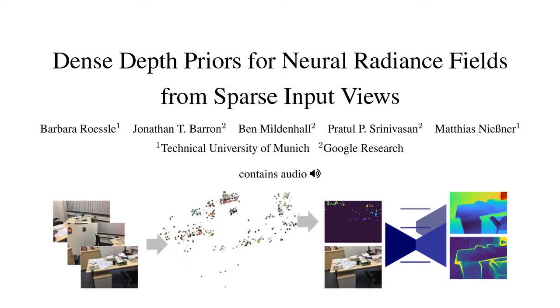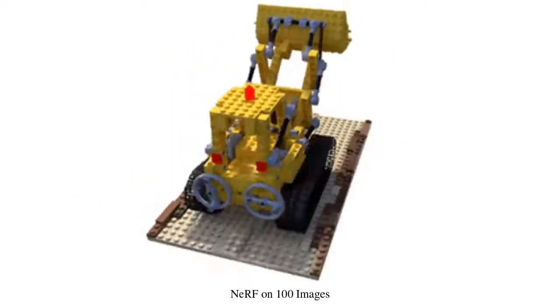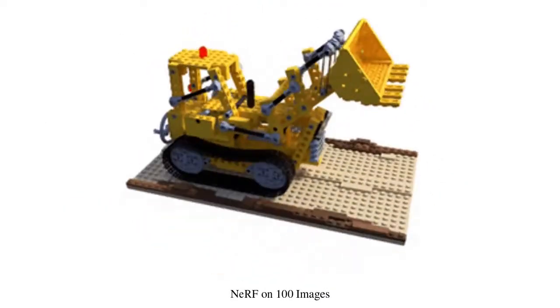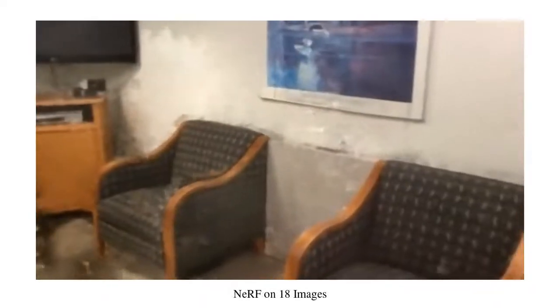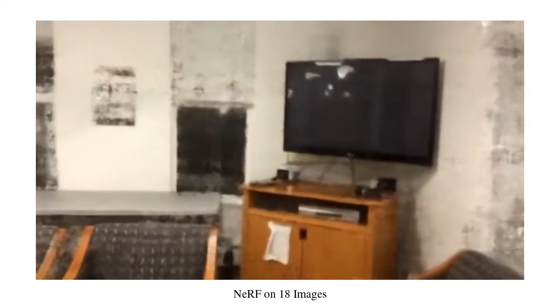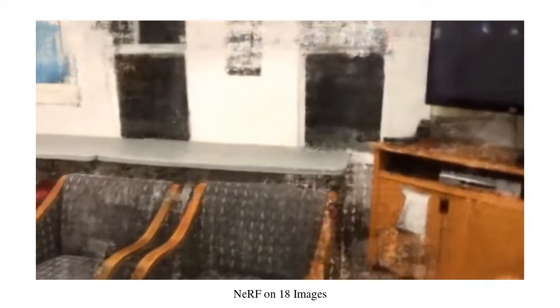We present dense depth priors for neural radiance fields from sparse input views. NeRF requires a large number of images, even for a single object. On an entire room with inside-out views, NeRF suffers from severe artifacts, particularly when only a small number of images are available.